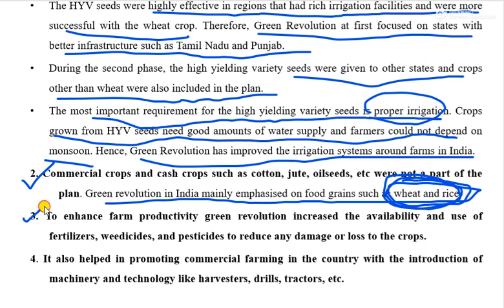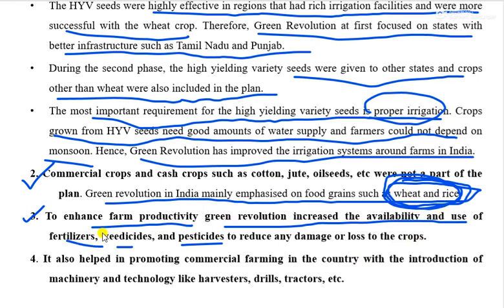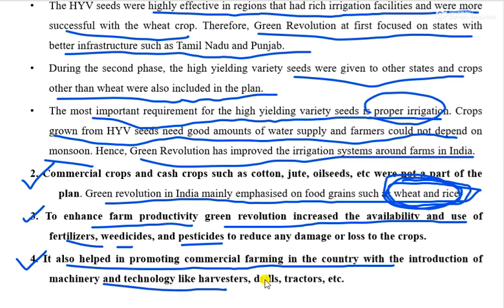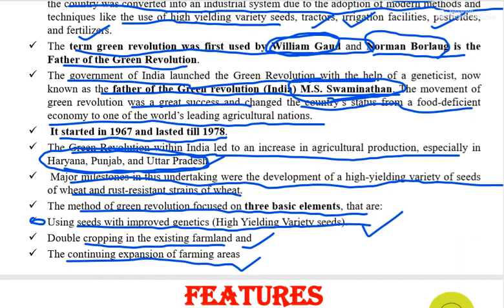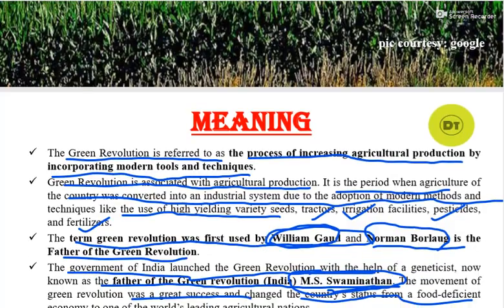To enhance farm productivity, green revolution increased the availability and use of fertilizers, weedicides, and pesticides to reduce any damage or loss to the crops. It also helped in promoting commercial farming in the country with the introduction of machinery and technology like harvesters, drills, and tractors.